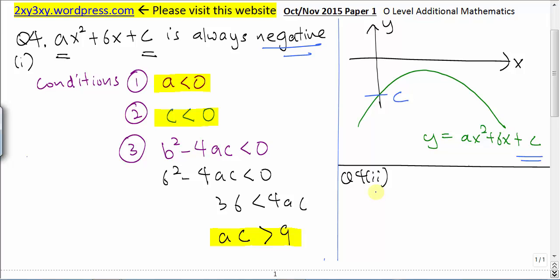In the second part of this question, we are asked to give a value of a and c that satisfied this statement here. So for a and c to satisfy this statement, we must fulfill all these three conditions. Let's determine the value of a first. a must be less than zero.